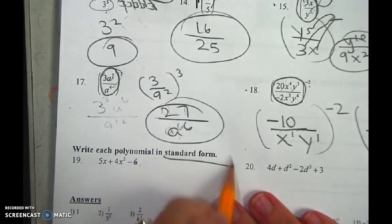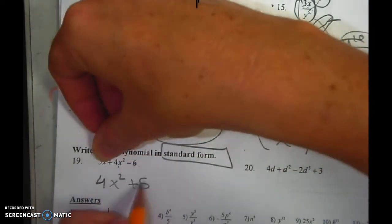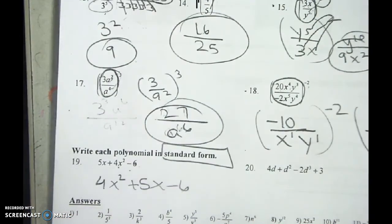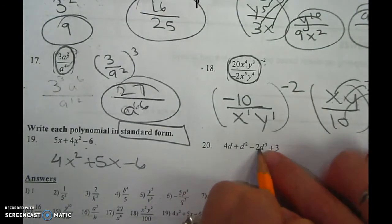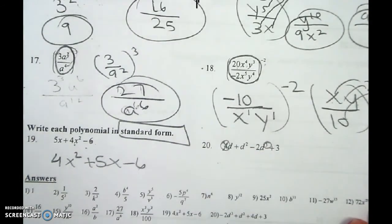Standard form. Standard form just means highest exponent to lowest exponent to no exponent at all. Highest exponent, not highest coefficient. Highest exponent. And then you see the answer there.